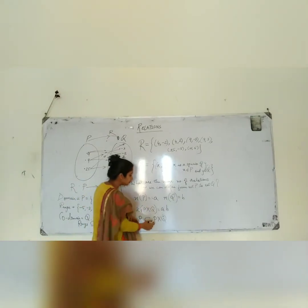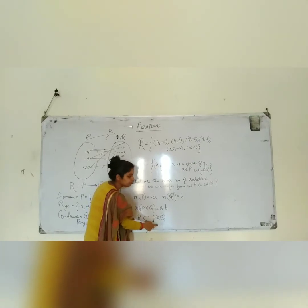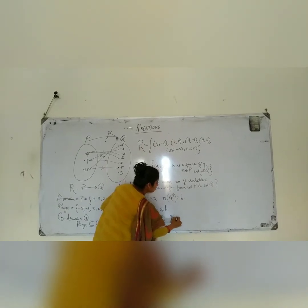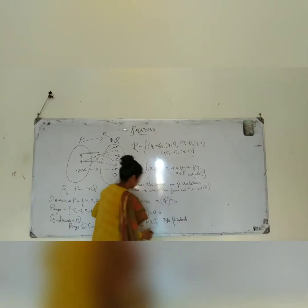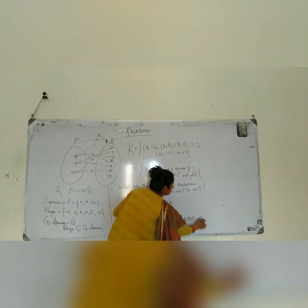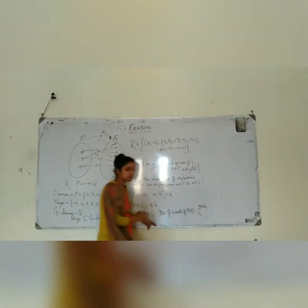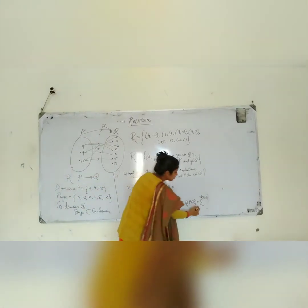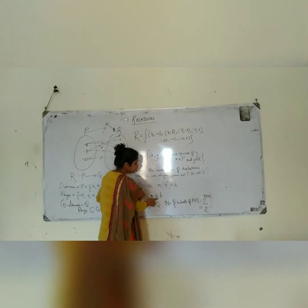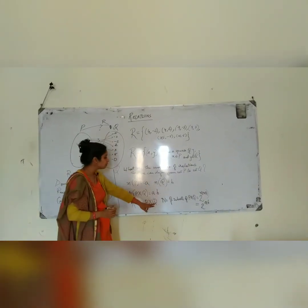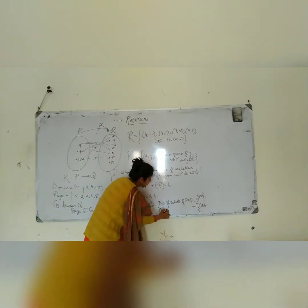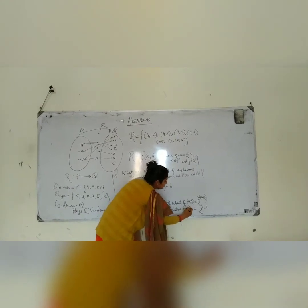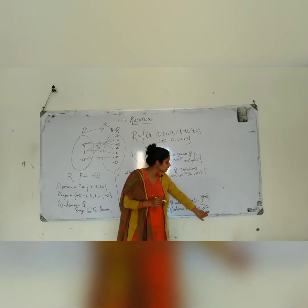So the maximum number of relations is equal to the number of subsets we can define of P cross Q. The number of subsets of P cross Q is 2 to the power of the number of elements in P cross Q, which is A into B. So the maximum number of relations is 2 to the power A into B.